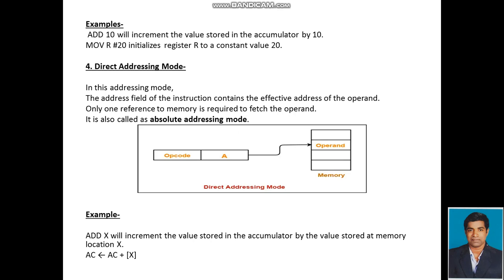Here in this example, the instruction contains the operand. In the operand portion, we are mentioning the accumulator register, which gives the address of the operand directly to the memory address.